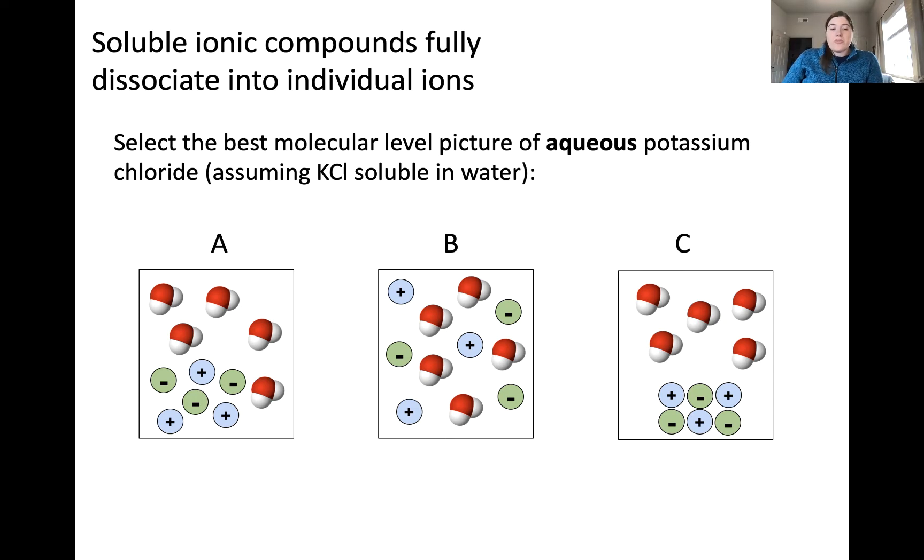So here are three different pictures, and based on what you know so far, which of these pictures would best represent aqueous potassium chloride, assuming the substance is soluble in water? The correct answer here is B.